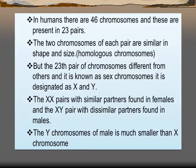Our body has 46 chromosomes, which make 23 pairs. These pairs are similar in shape and size. If they are similar, we call them homologous chromosomes. If they are different, we call them heterologous chromosomes.